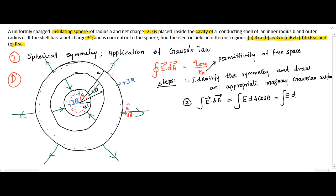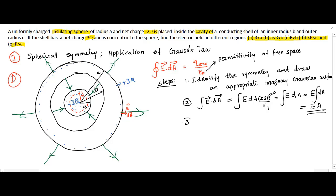Since each point on the sphere is symmetric to the charge distribution, E has the same magnitude everywhere on the surface. So we can take E out of the integral, giving E times the total area of the Gaussian surface, which is E times 4 pi r squared. Having evaluated the left side, the next step is to evaluate the right side — that is, to work out the charge enclosed by the surface. Finally, we substitute both sides into Gauss's law to rearrange and evaluate E.